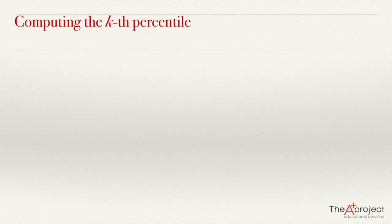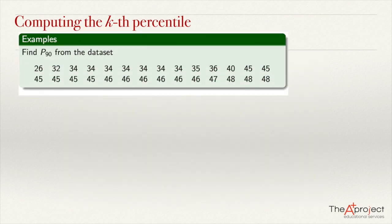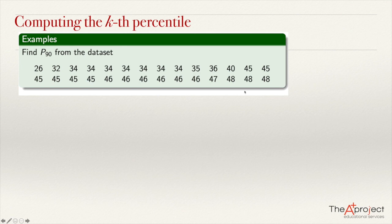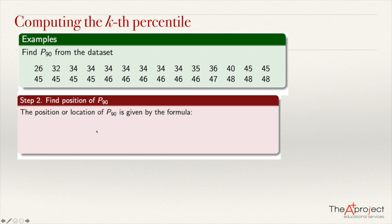Let's see another example. Imagine we have this data set and want to compute the 90th percentile. Counting the data: there are 28 data points, and the data is already ordered. So we skip to the second step: find the index. Using the formula i = k/100 × n, with k = 90, we get i = 0.90 × 28.